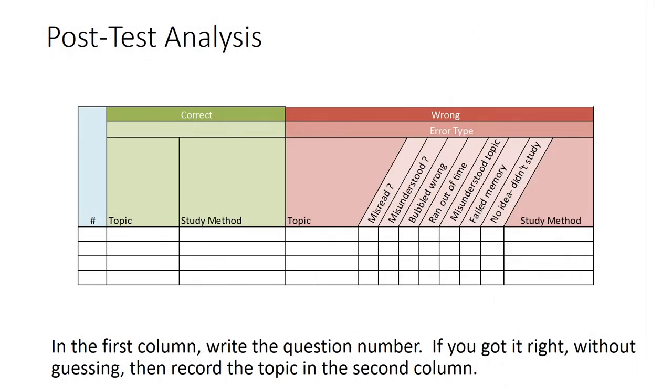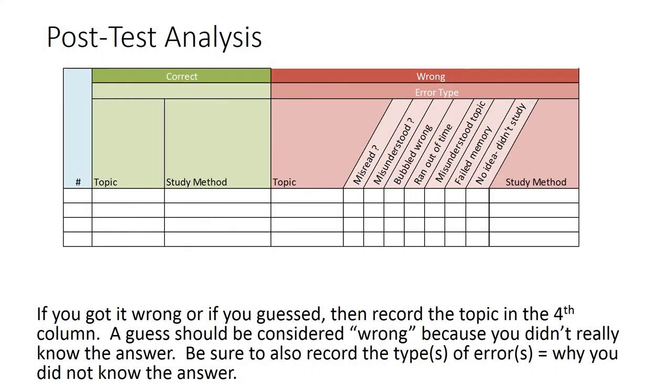In the first column, write the question number. If you got it right without guessing, then record the topic in the second column. If you got it wrong or if you guessed, then record the topic in the fourth column. A guess should be considered wrong because you didn't really know the answer.